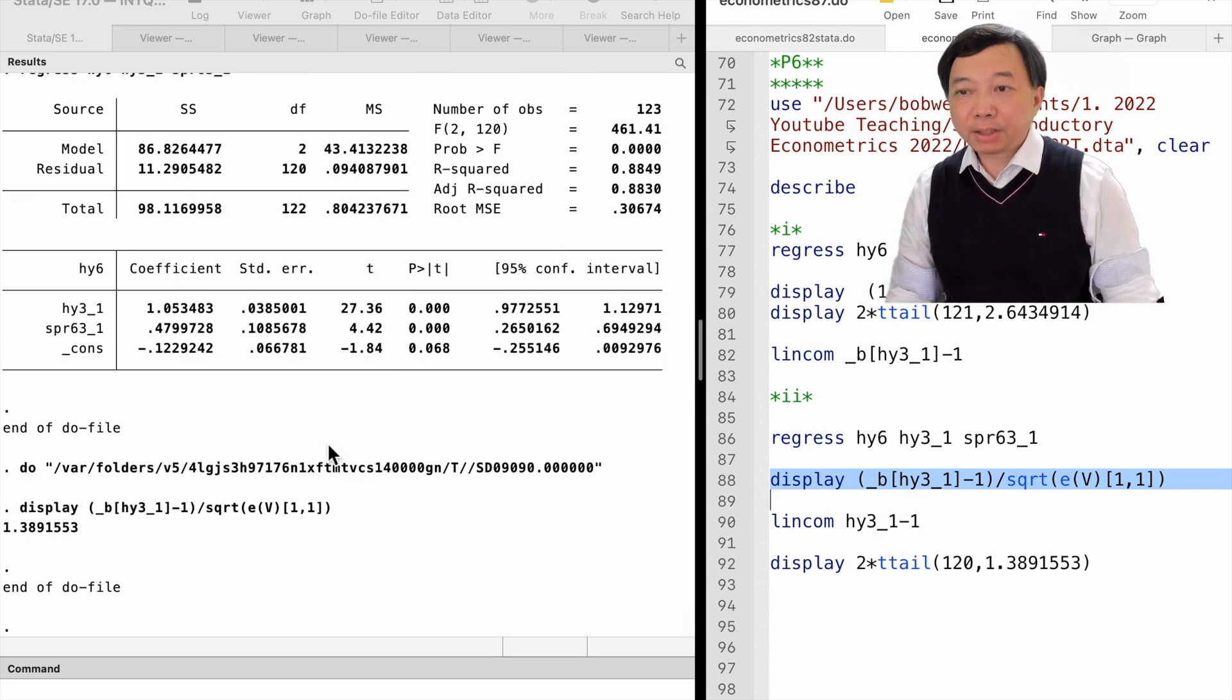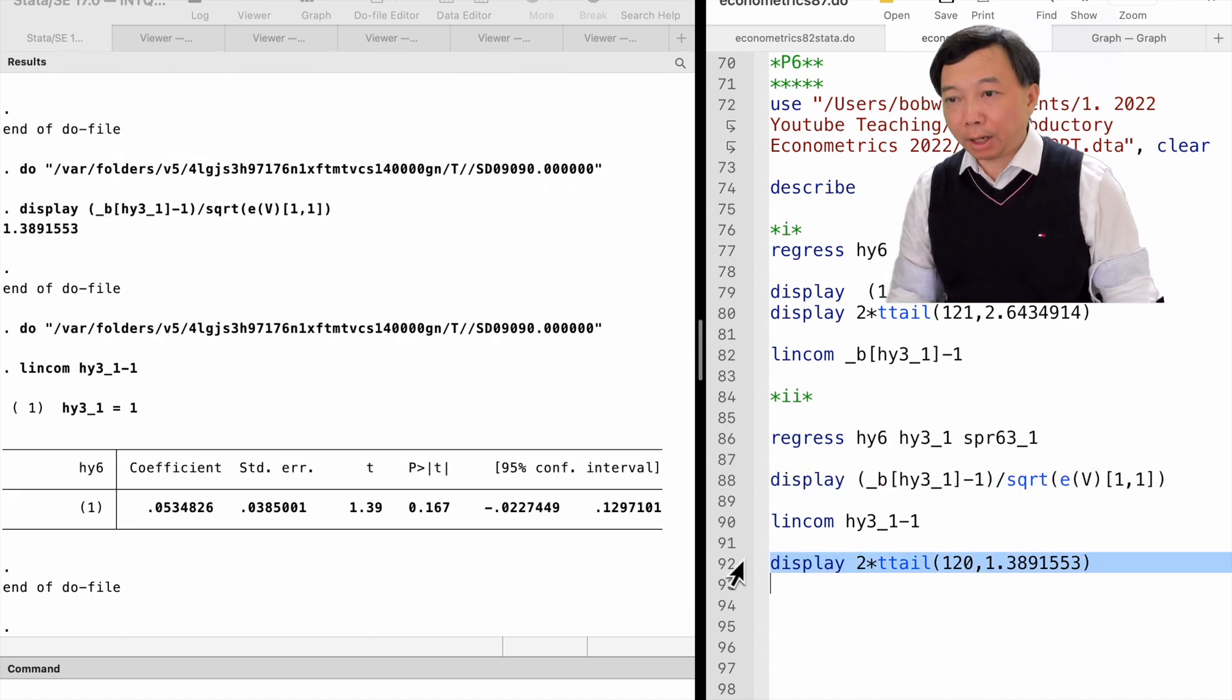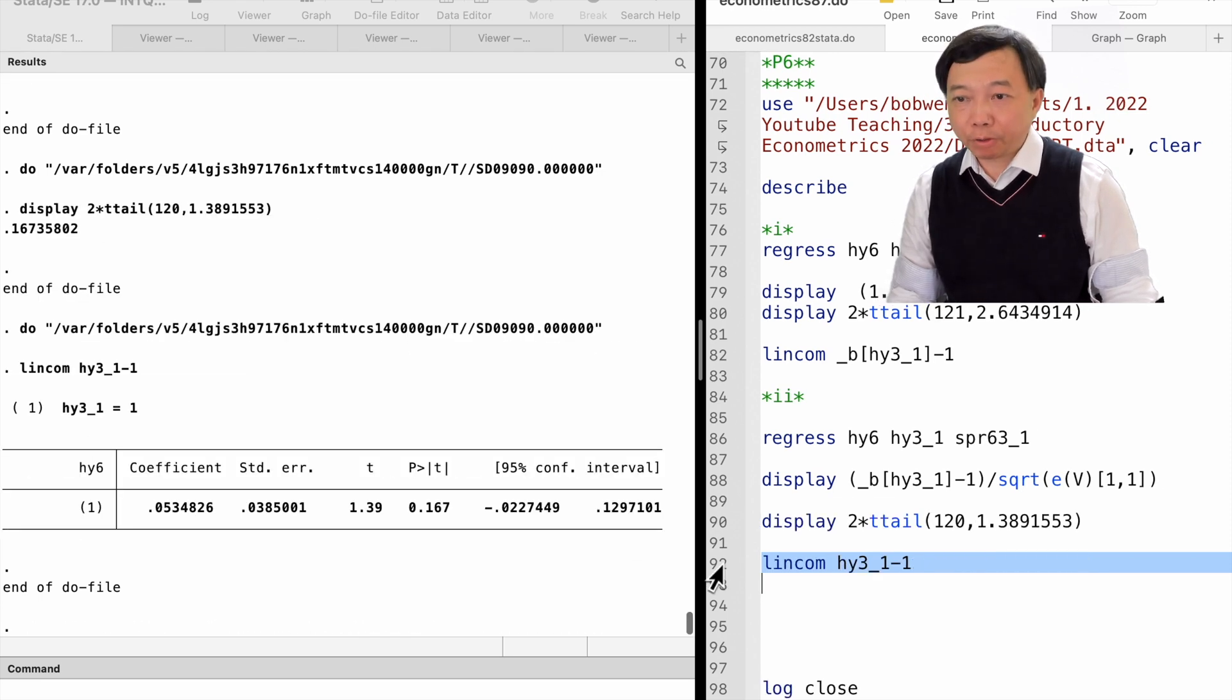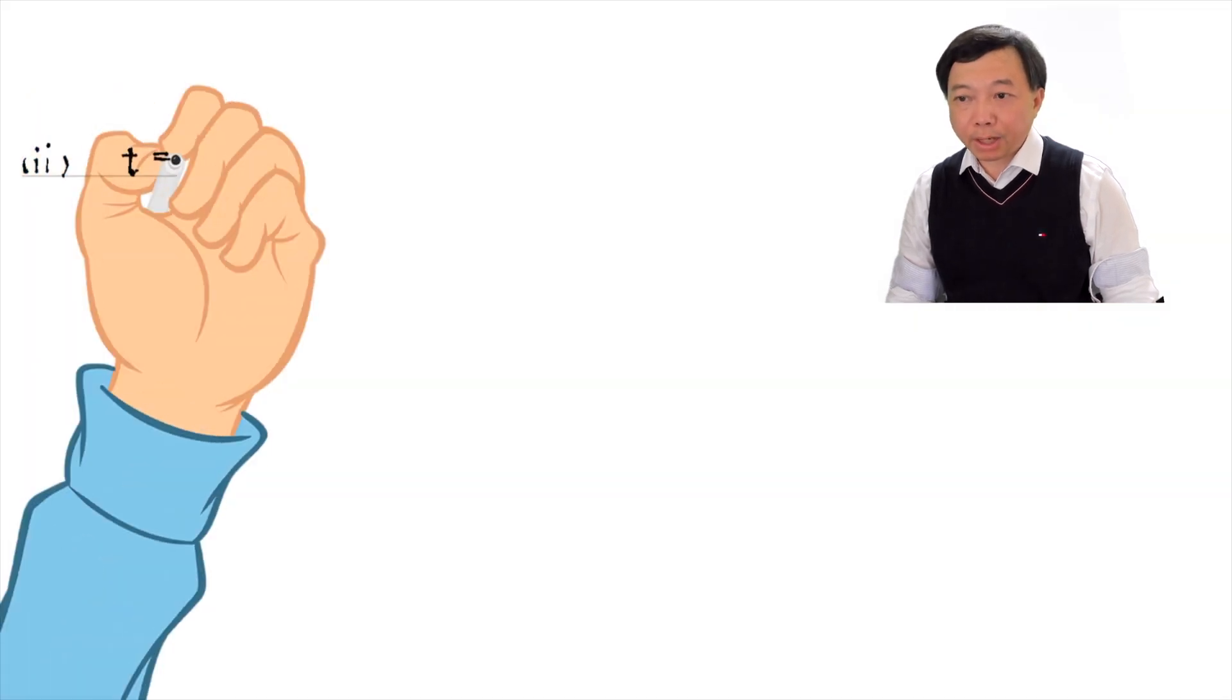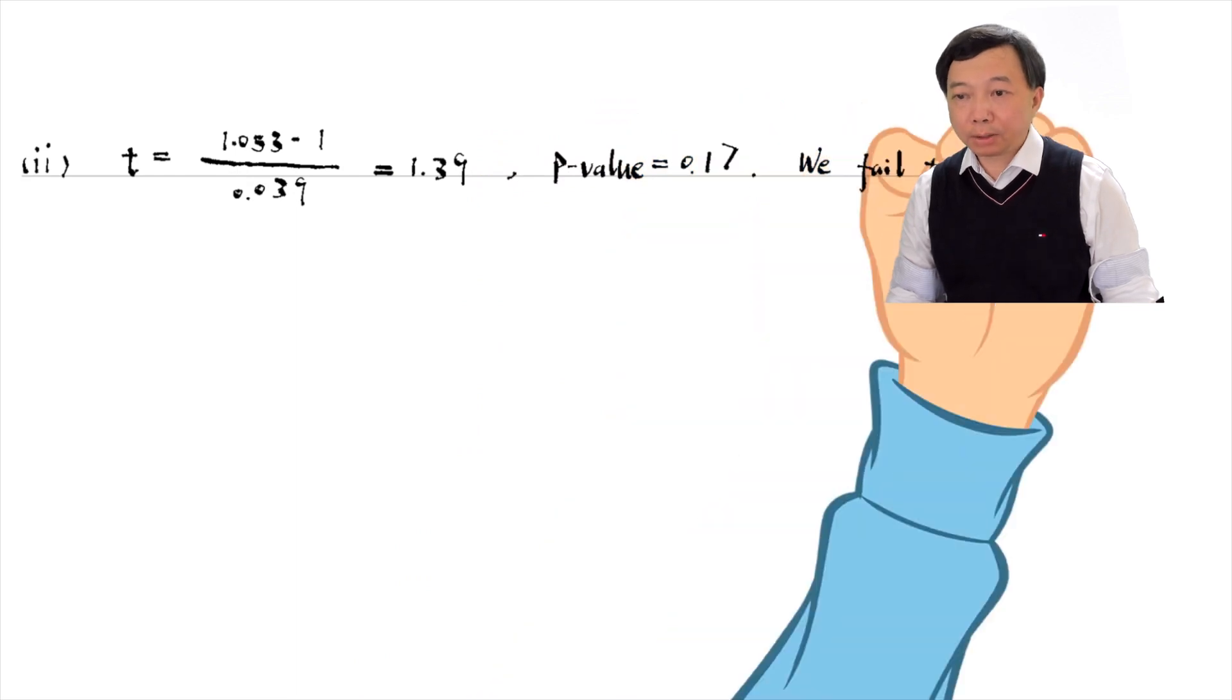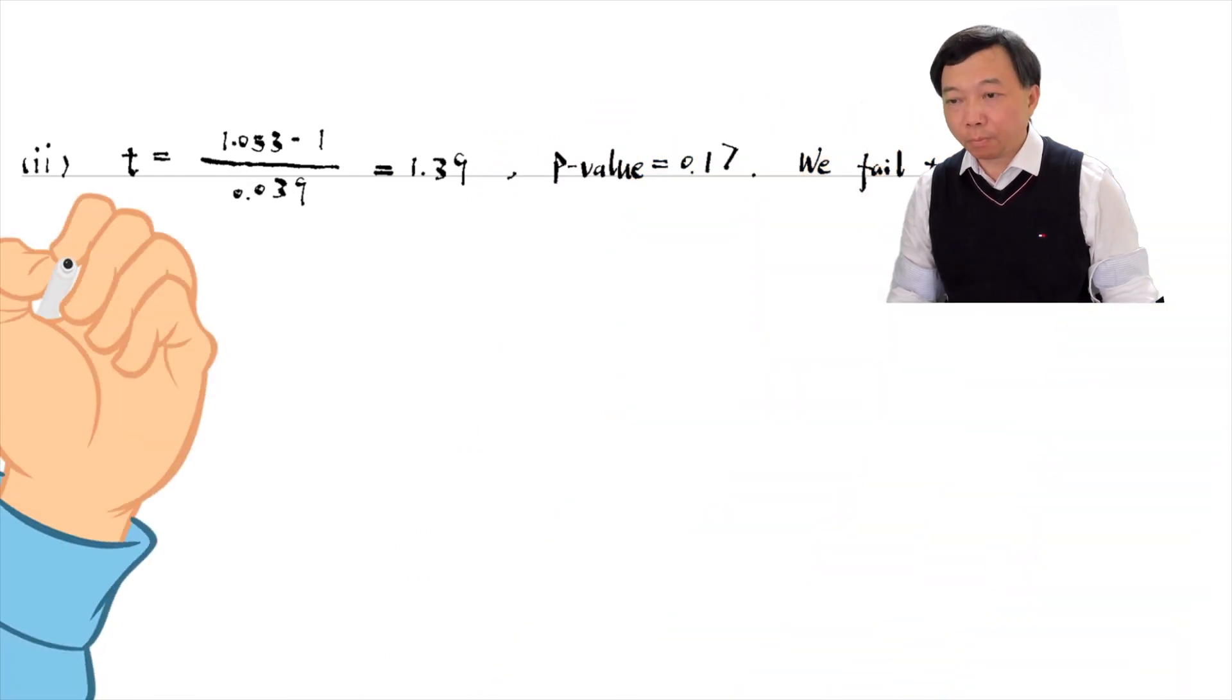The t-statistic is 1.39 and its two-sided p-value is 0.17. We fail to reject the null hypothesis that beta_1 equals 1 at even the 10% level. It is no longer statistically different from 1.